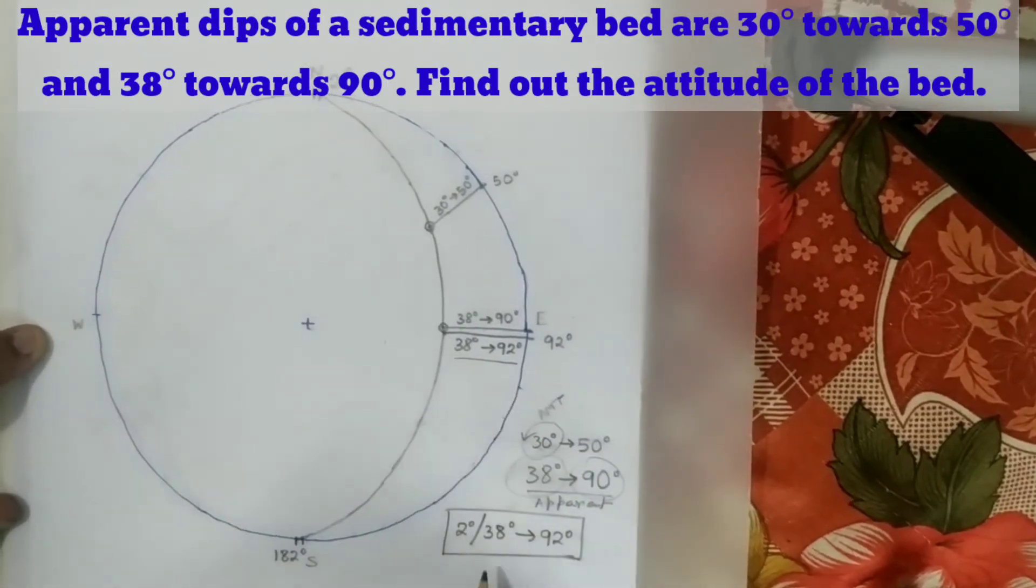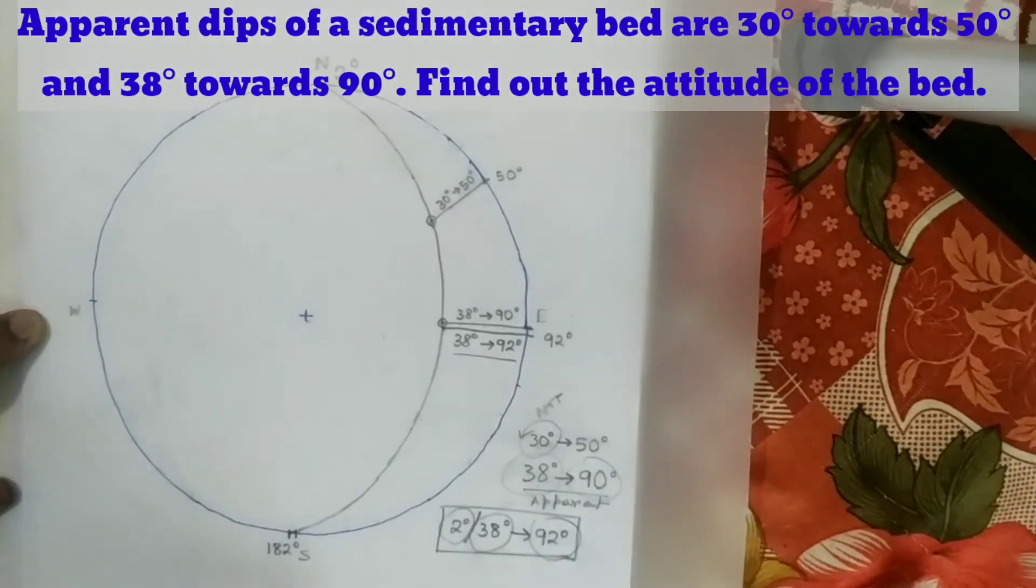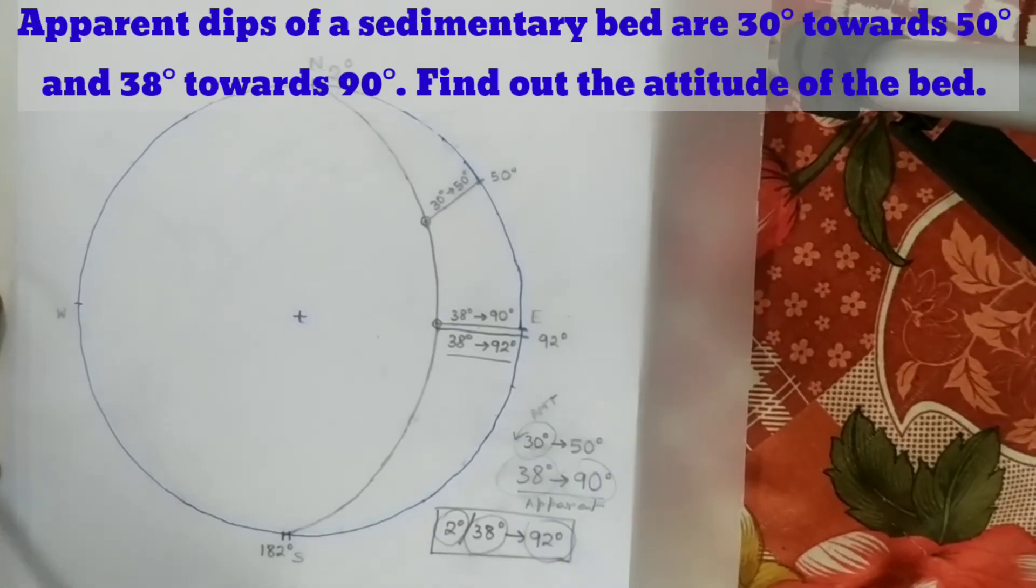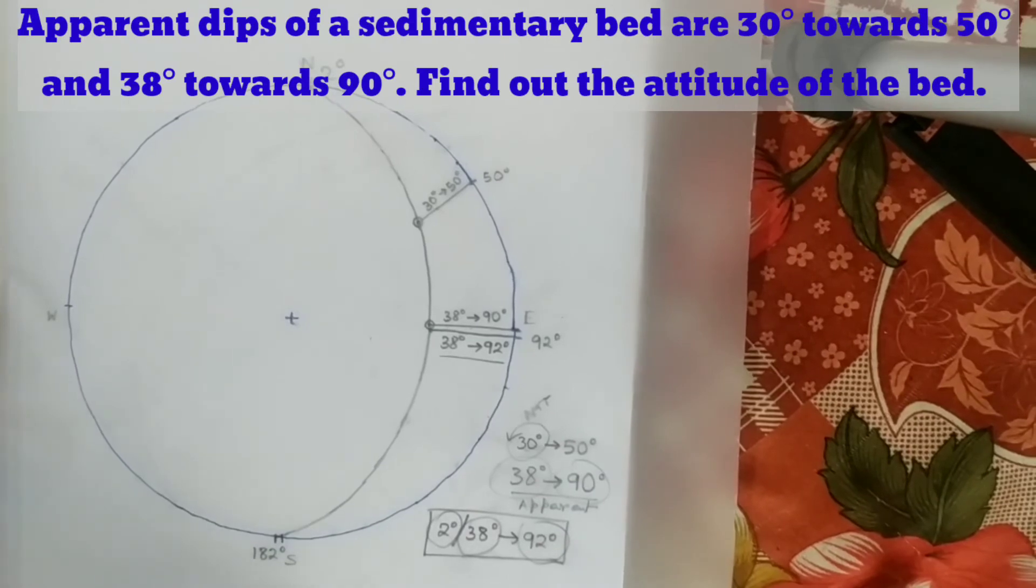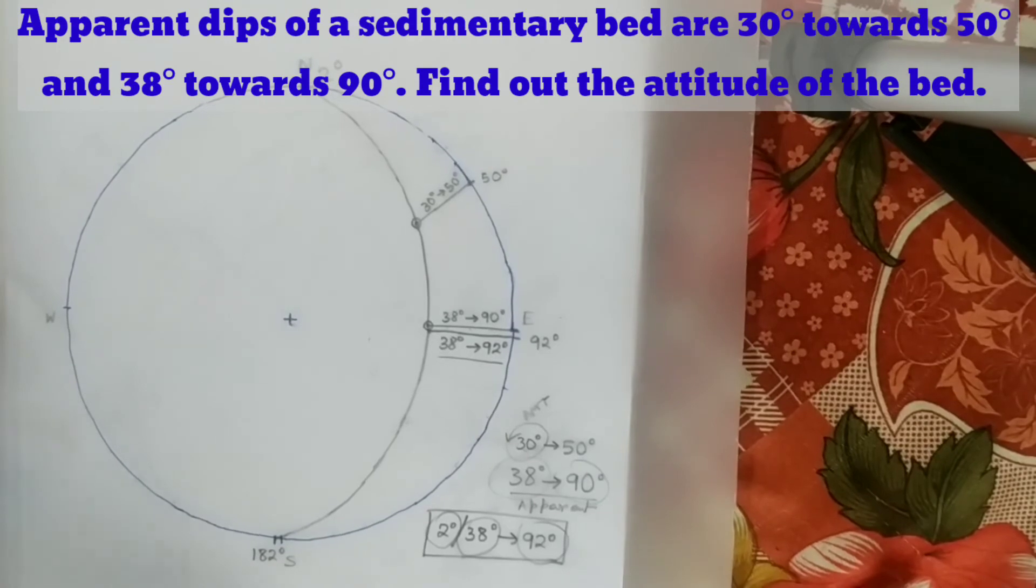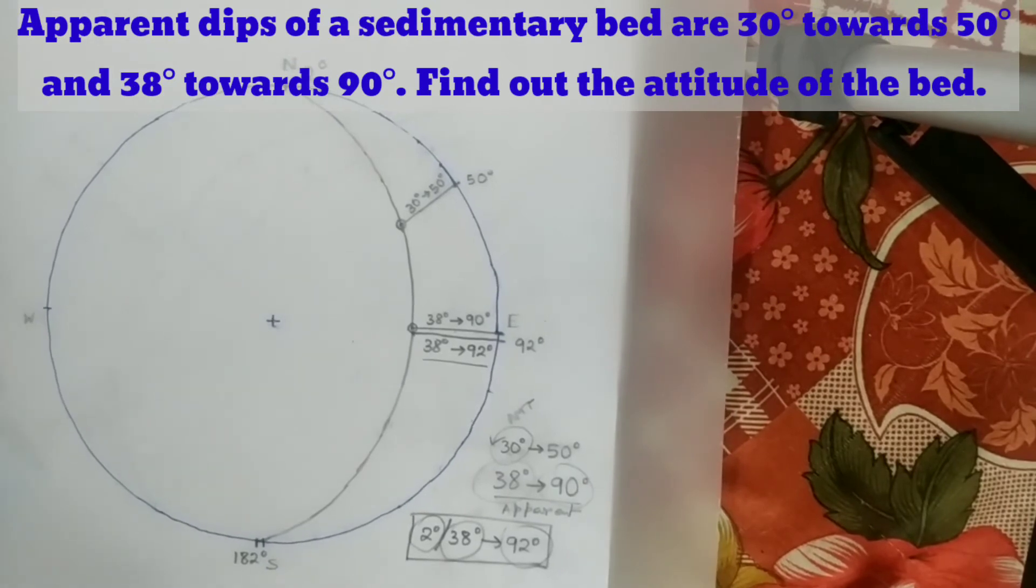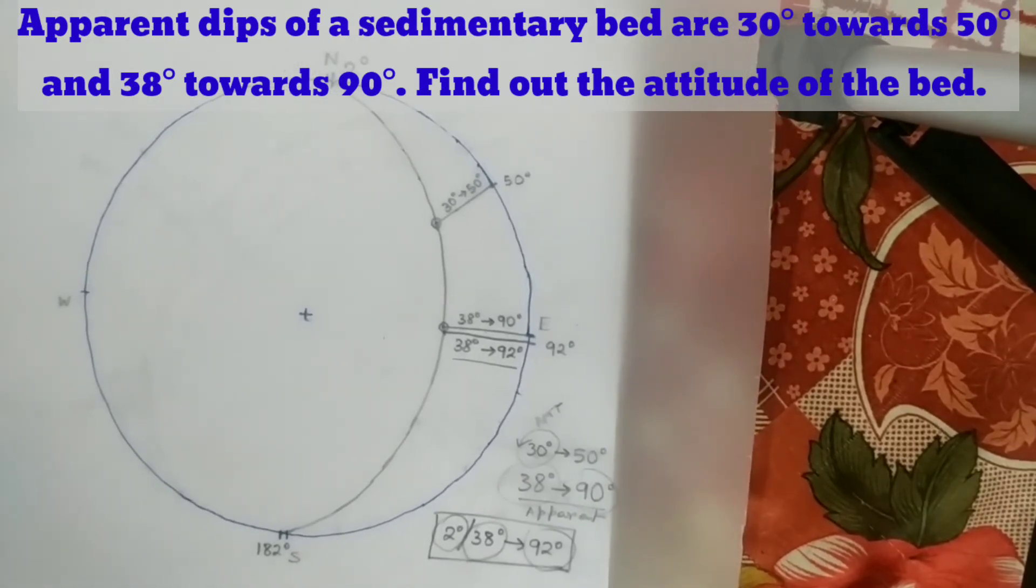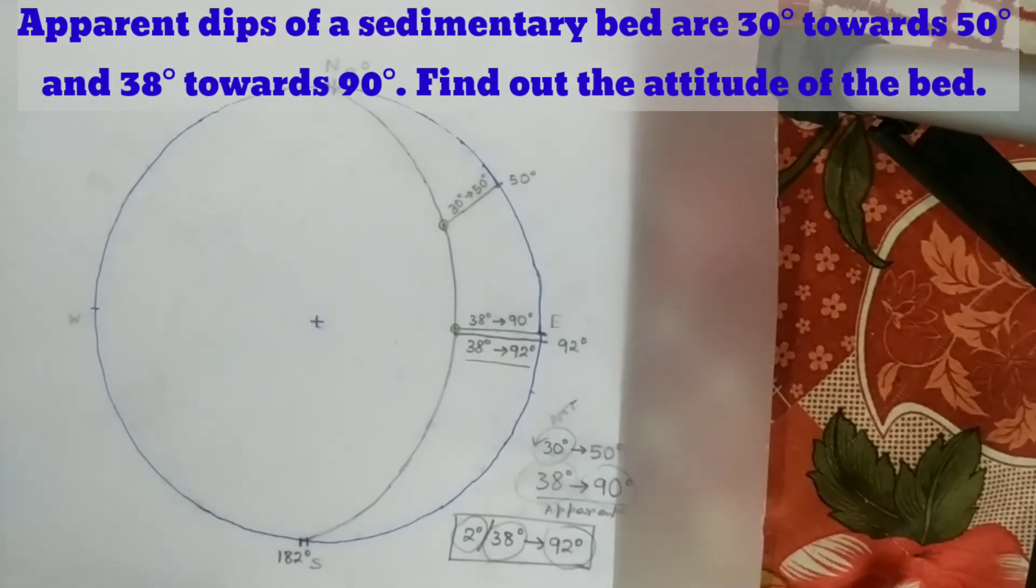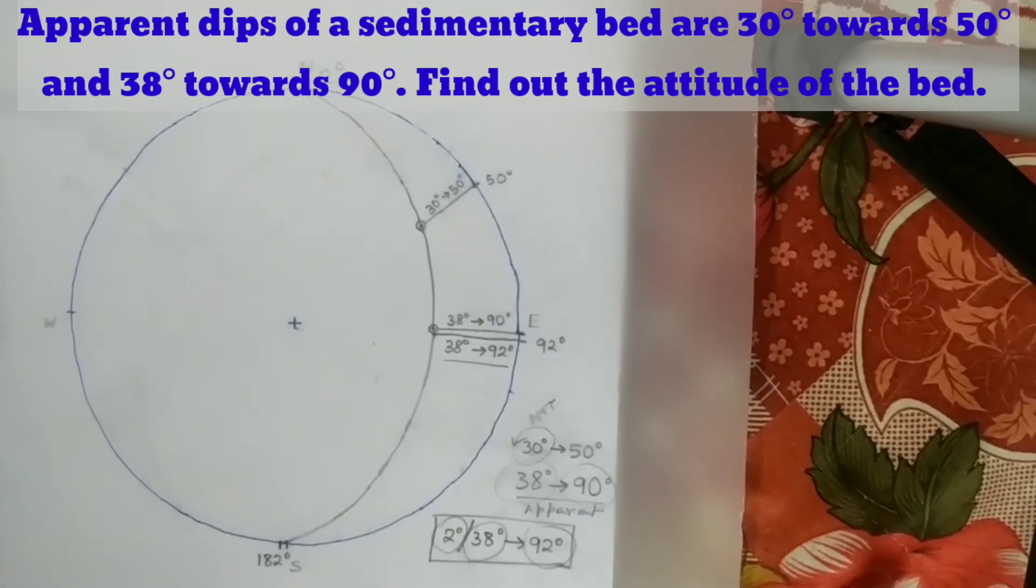This is the actual data: this is strike, this is true dip amount, this is true dip direction. So these are about today's problem. Three problems we have solved in this way. Hopefully you have enjoyed this session. If you like our videos, please click the like button. If you find any difficulties, write in the comment section.